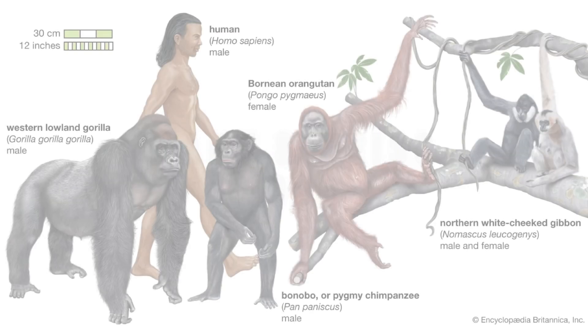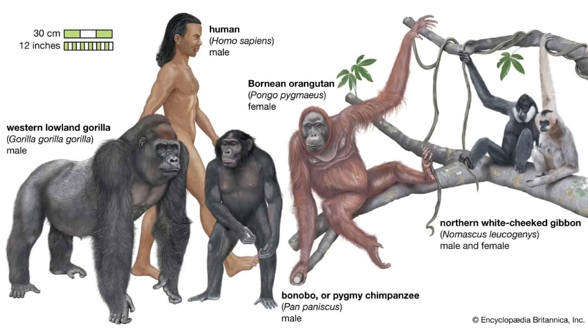Mann and Weiss, 1996, proposed that the tribe Hominini should encompass Pan and Homo, grouped in separate sub-tribes. They classified Homo and all bipedal apes in the sub-tribe Hominina, and Pan in the sub-tribe Panina.